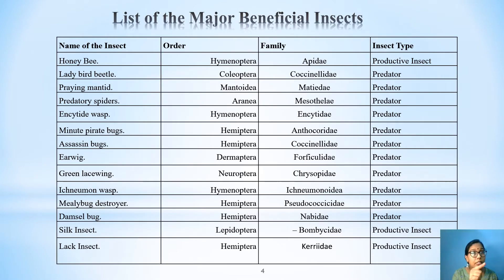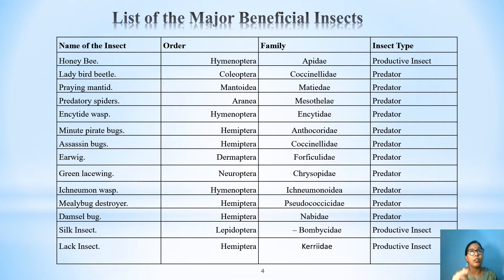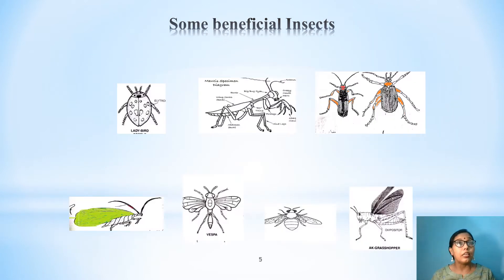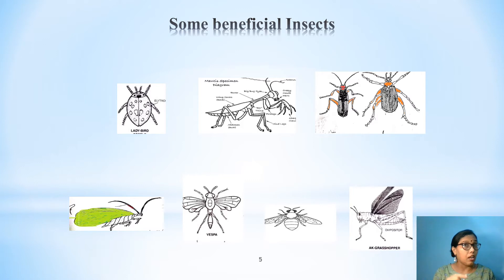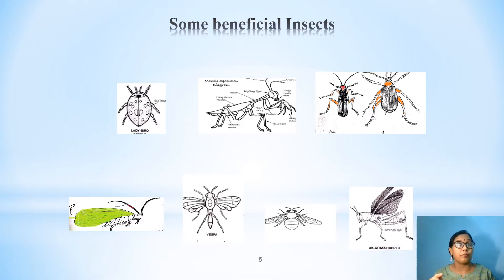Here you can see a list of beneficial insects with their family, order, and their role in the living world. The same list is attached in the soft material, so you can see it there also. Here are some diagrams of important beneficial insects which we can find in our surrounding area. I have drawn some of them while I borrowed the rest from web sources.